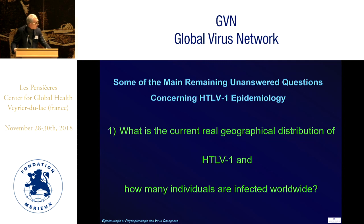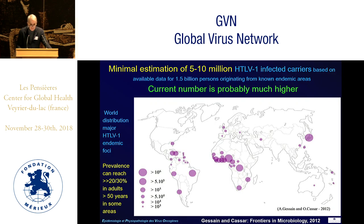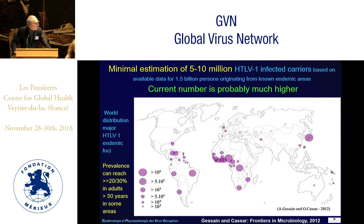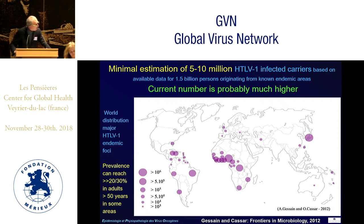What are the main remaining unanswered questions regarding the epidemiology of this virus? First, what is the real geographical distribution of HTLV-1, and how many individuals are infected worldwide? The minimal estimation is about 5 to 10 million HTLV-1-infected carriers, but this is based on only around 1.5 billion persons originating from non-endemic areas. There are many places where we don't really know the situation, meaning the current numbers are probably much higher.